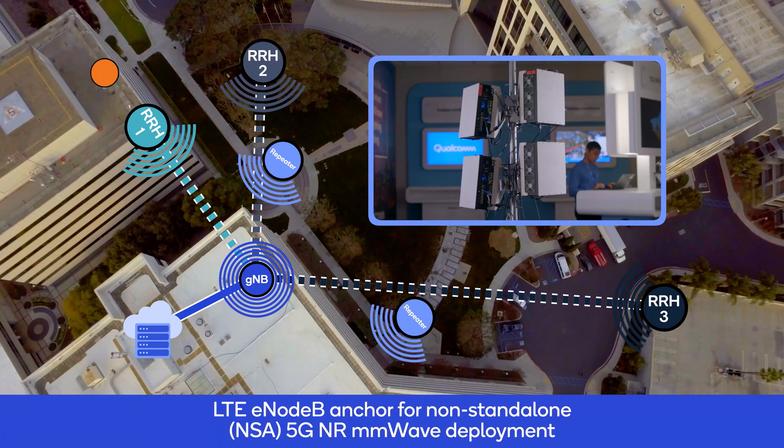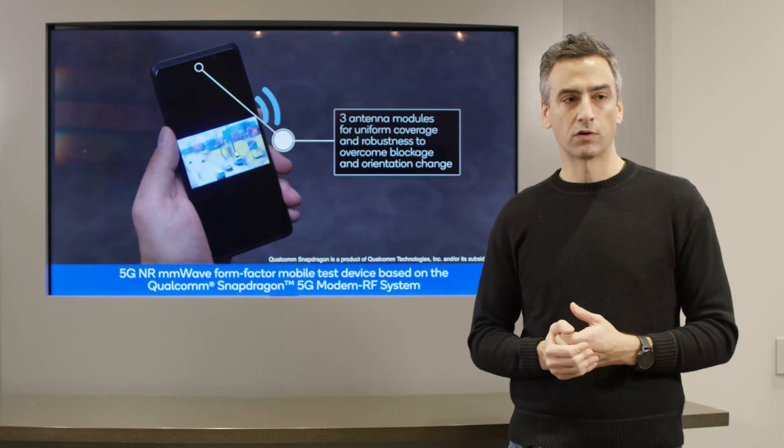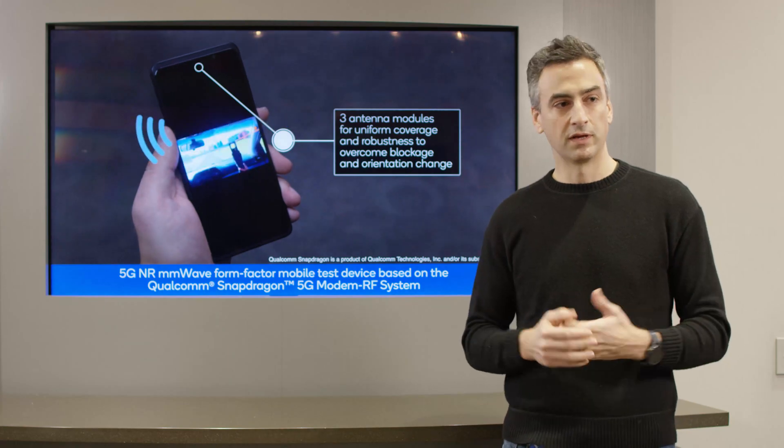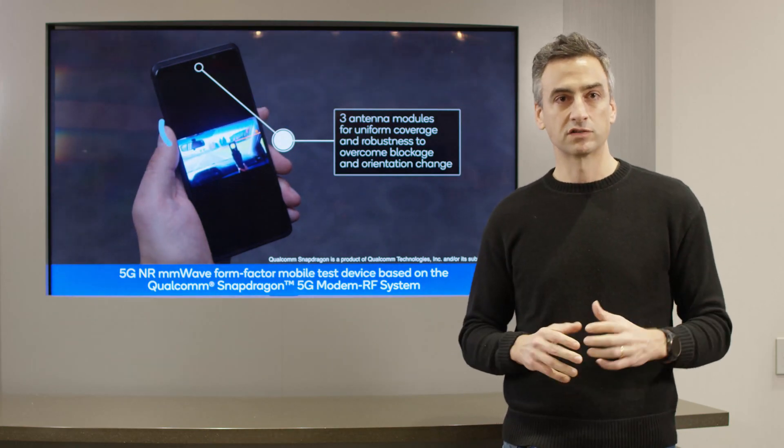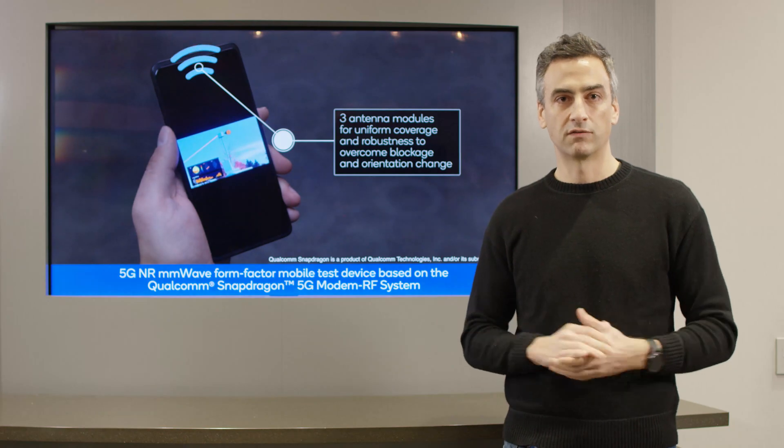We've also enhanced it with Qualcomm prototype repeaters for non-line-of-sight coverage and end-to-end coverage. The test device on our network is based on a Qualcomm Snapdragon 5G modem RF system. We have three antenna modules for uniform coverage and experience for the UE.